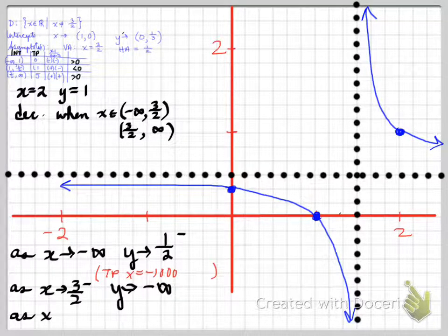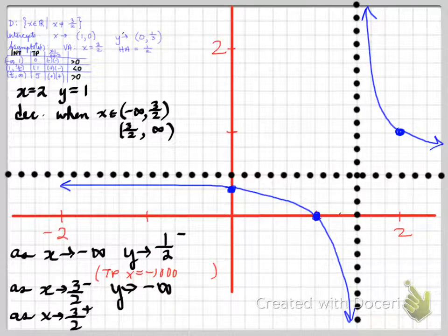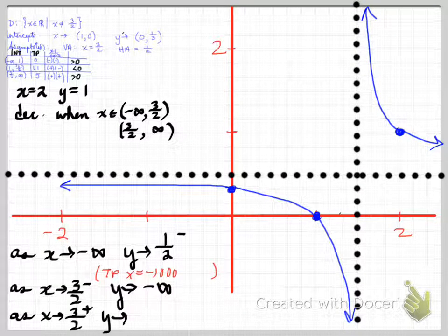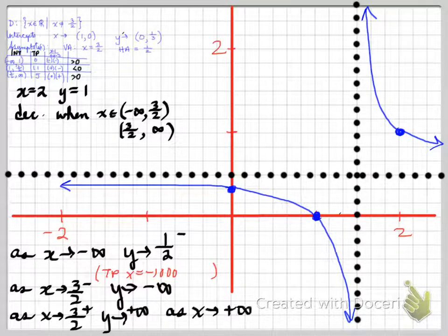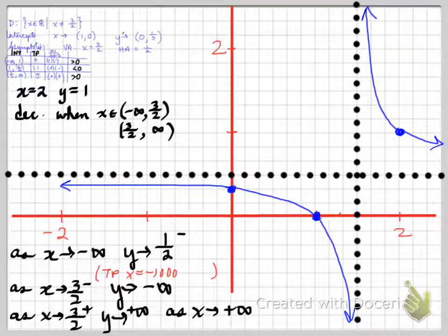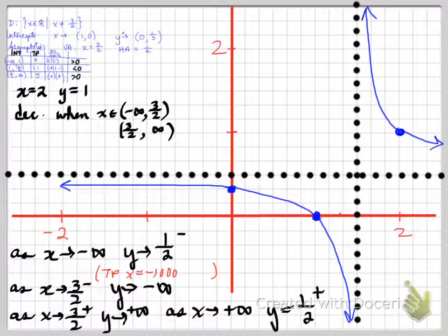As x approaches 3/2 from the right (positive side), y approaches positive infinity. And as x approaches positive infinity, looking at the right branch, y approaches 1/2 — but from the upper side, the positive side.